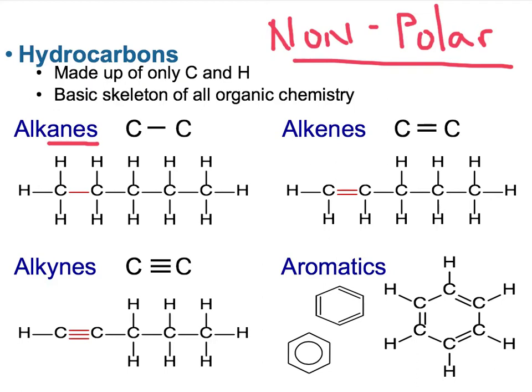If a hydrocarbon has at least one double bond, those are the alkenes, where the number of carbons gives the prefix and the '-ene' ending tells you there's at least one double bond. We also tag a number to indicate which carbon has the double bond. The alkynes use the ending '-yne' and have at least one triple bond. Then we have the aromatics, which are always in a ring structure.